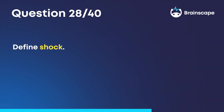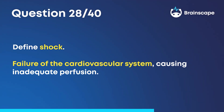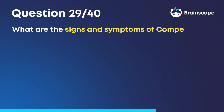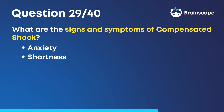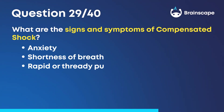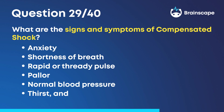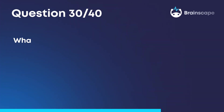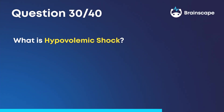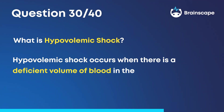Question 28: Define shock. Failure of the cardiovascular system causing inadequate perfusion. Question 29: What are the signs and symptoms of compensated shock? Anxiety, shortness of breath, rapid or thready pulse, pallor, normal blood pressure, thirst, and normal LOC. Question 30: What is hypovolemic shock? Hypovolemic shock occurs when there is a deficient volume of blood in the body.